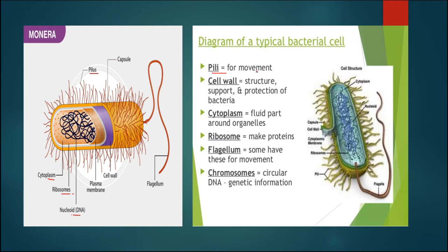Pili help in movement and conjugation. Cell wall provides support and protection. Cytoplasm is the fluid part containing organelles. Ribosomes make different types of proteins. Flagella help in movement. Chromosomes are circular DNA that transmit characters from one generation to another. Besides the main circular DNA, extra-chromosomal DNA also exists, known as plasmids.